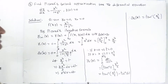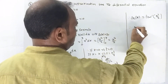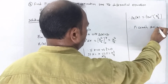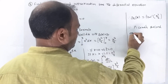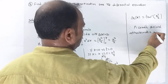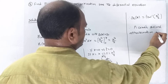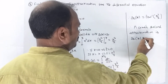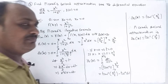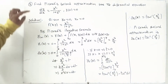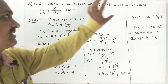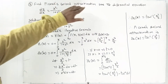That is the second approximation. Therefore y₂ of x is equal to tan inverse of x cubed by 3. That is the second approximation — find Picard's second approximation for the differential equation.